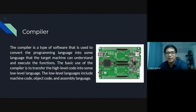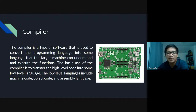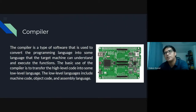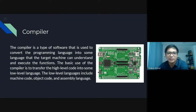The compiler helps a lot because in software you can actually determine errors because of the compiler. It points out the specific line number where you have an error, and then eventually you can fix the error.